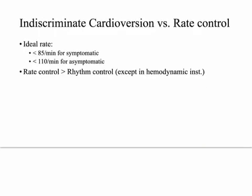Rate control supersedes rhythm control — there's a difference between indiscriminate cardioversion versus rate control. The ideal rate, if the AFib is actually causing problems and symptoms, is 85 beats per minute. If there are no symptoms, you can be more lenient and allow a rate of up to 110 beats per minute.